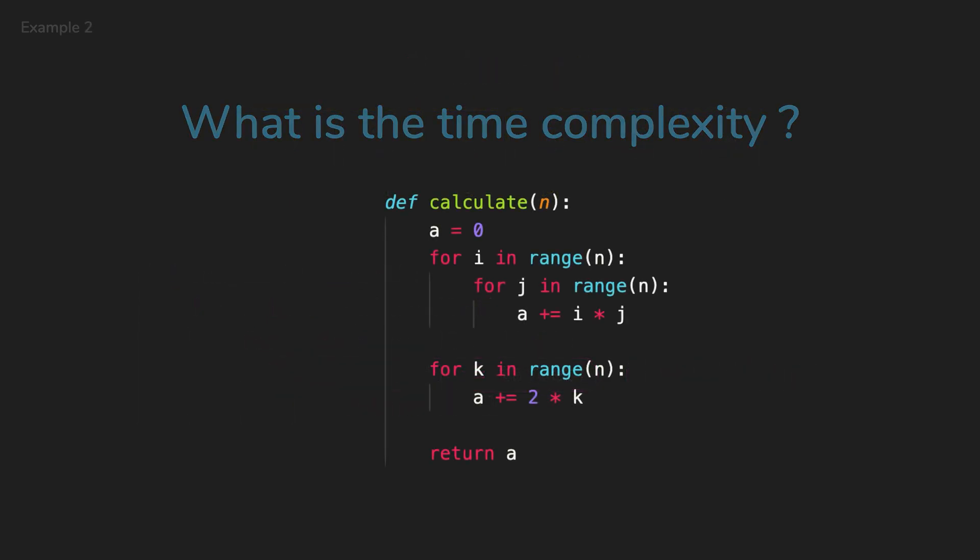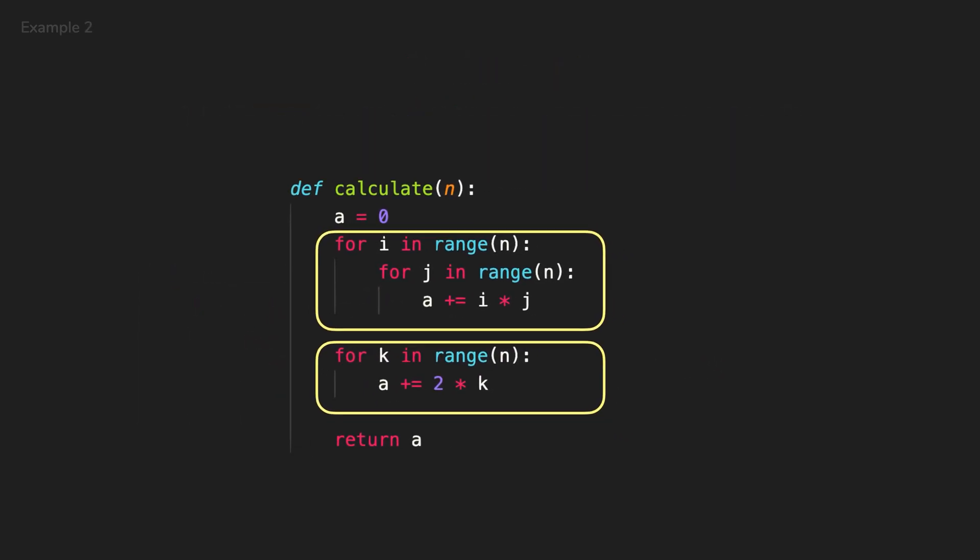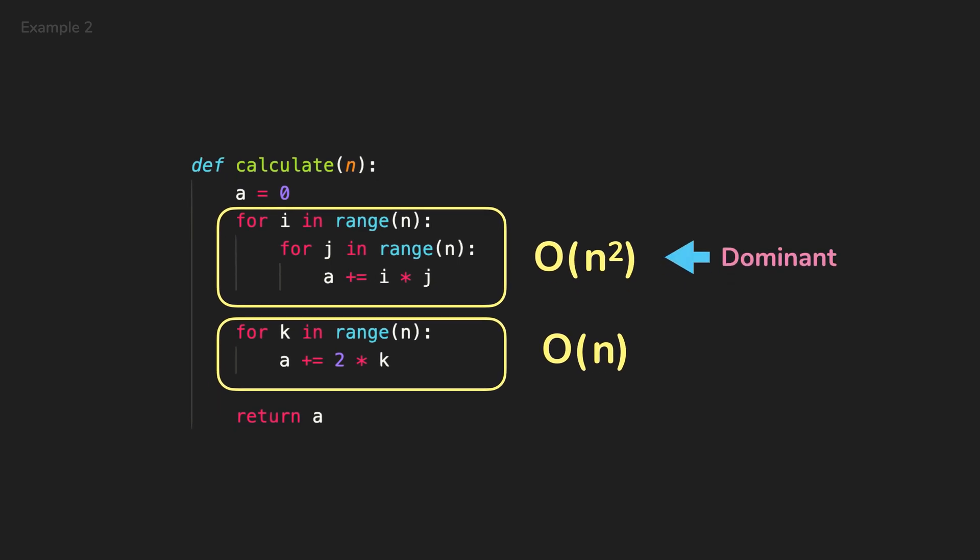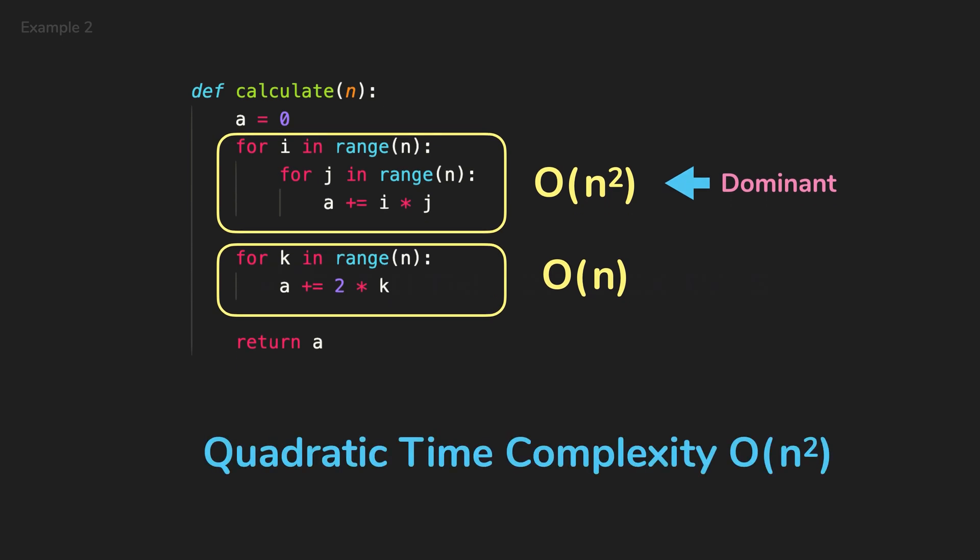Let's look at another example. The first part of the function is a loop in the loop. This line will run n squared times. So the time complexity of this would be O of n squared. The second part will run n times. We are just looping n times. So it will be O of n. We dropped the O of n because it is not dominant. So the time complexity of this function will be O of n squared.